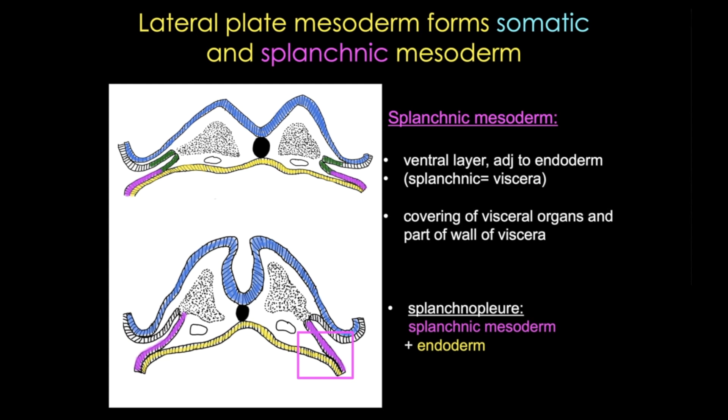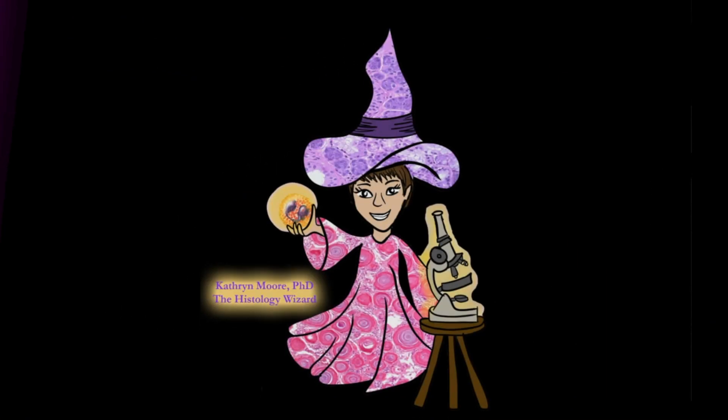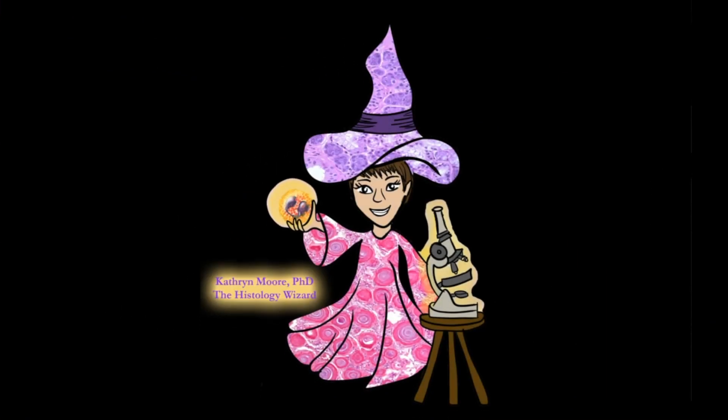This ends our whirlwind trip through gastrulation, the primary developmental event occurring in week three. You may not be convinced that gastrulation is the most important time in your life, but I hope you have a better sense of the importance of this developmental process in setting up the body plan. Be sure to check out, like, and comment on my other videos — suggestions and topics always welcome.